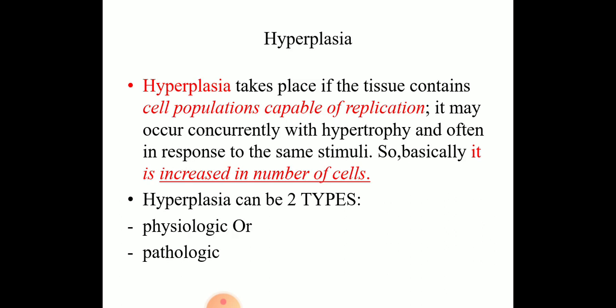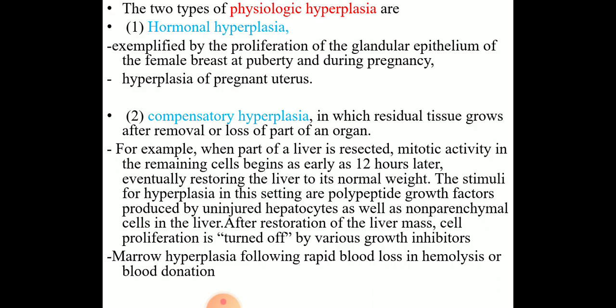Now let us discuss hyperplasia. What is hyperplasia? Hyperplasia takes place if the tissue contains a cell population capable of replication. It may occur concurrently with hypertrophy and often in response to the same stimuli — basically it is an increase in the number of cells. It is again of two types: physiological or pathological. The two types of physiological hyperplasia are hormonal hyperplasia and compensatory hyperplasia. Hormonal hyperplasia generally increases the functional capacity of a tissue when needed; the most common examples are proliferation of glandular epithelium of the female breast at puberty and during pregnancy, as well as hyperplasia of the pregnant uterus.